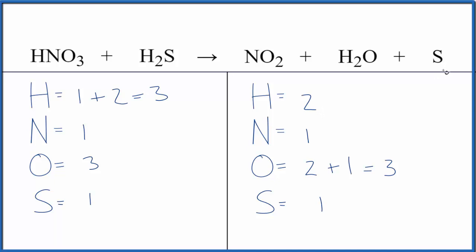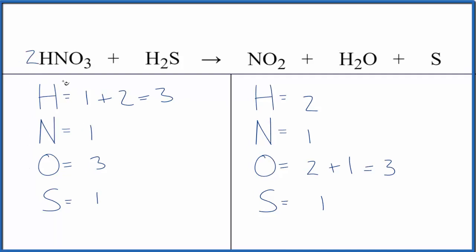The way to approach this is we're going to leave the sulfur to last because it's by itself. We change its coefficient, that won't change anything. Why don't we try to get the hydrogens to an even number here? And the easiest way to do that is to put a two in front of the HNO3.